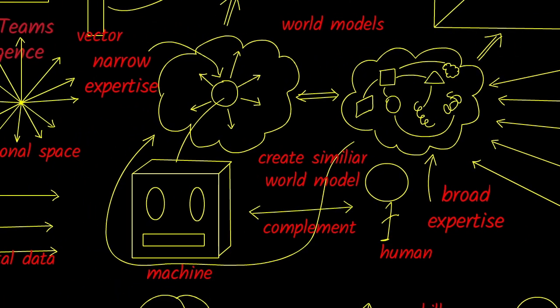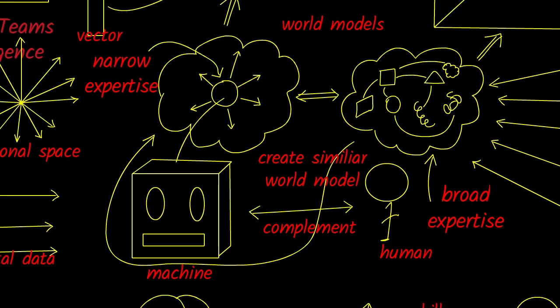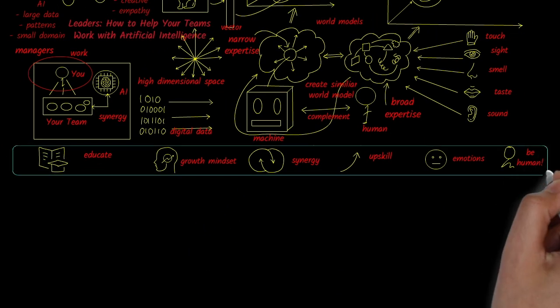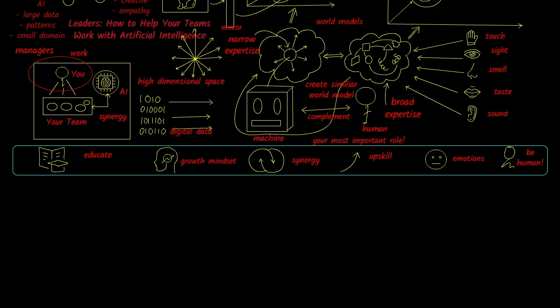By taking these steps, you can create a workplace where AI isn't seen as an enemy, but as a powerful ally. Together, humans and AI can achieve outcomes far greater than either one could do alone. And as a manager, your most important role is to guide your team in adapting to this new reality, not just to survive, but to thrive.